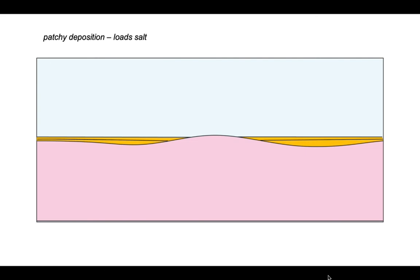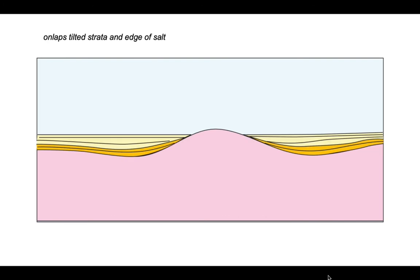Natural variations in the distribution of sediments across the salt body, together with variations in the viscosity, the flow ability of the salt from place to place, will generate preferred places to amplify loads. And these will be places where subsidence can occur further like this.